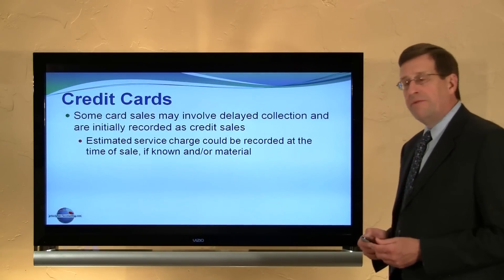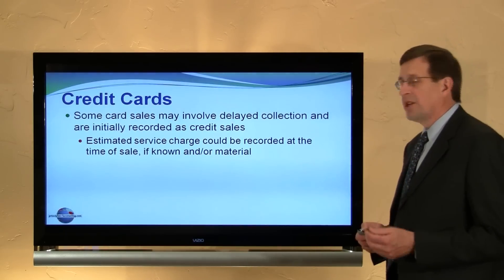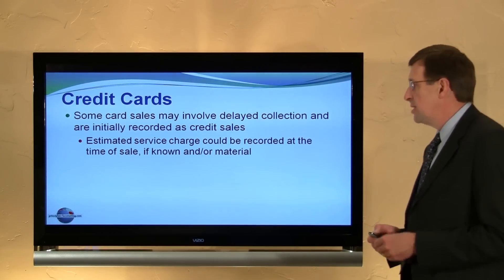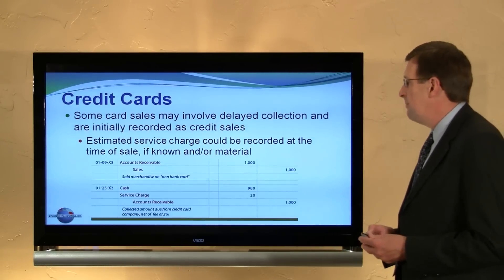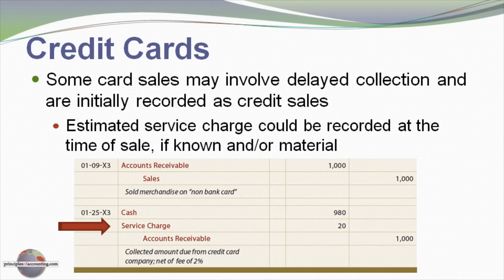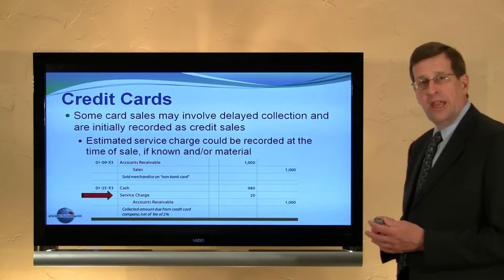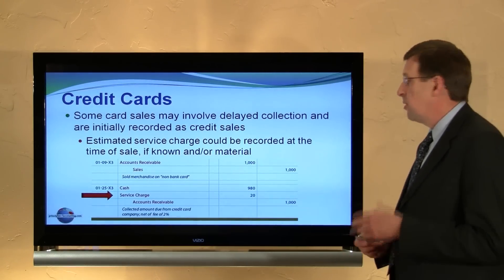Some other types of credit cards may involve delayed collections. Typically American Express would fall in this category — referred to in the textbook as non-bank credit cards. In an example with a $1,000 sale, I credit sales $1,000 and record a $1,000 receivable, since I don't yet know the net amount. Later when I collect, the credit card company only provides $980, and at that point I record the $20 service charge. As a practical matter, it may be 30 or 60 days before the merchant actually collects on an American Express type transaction.